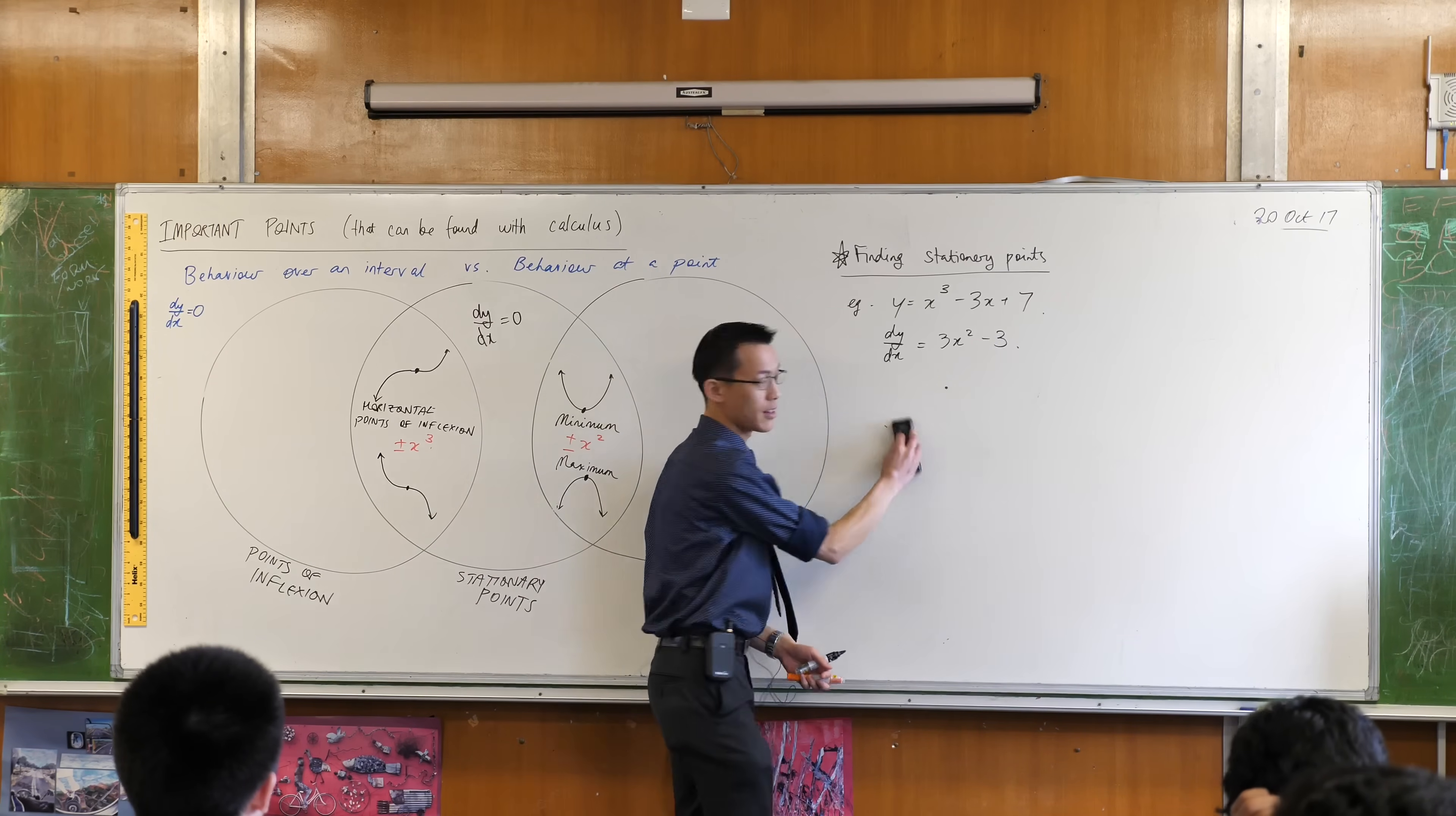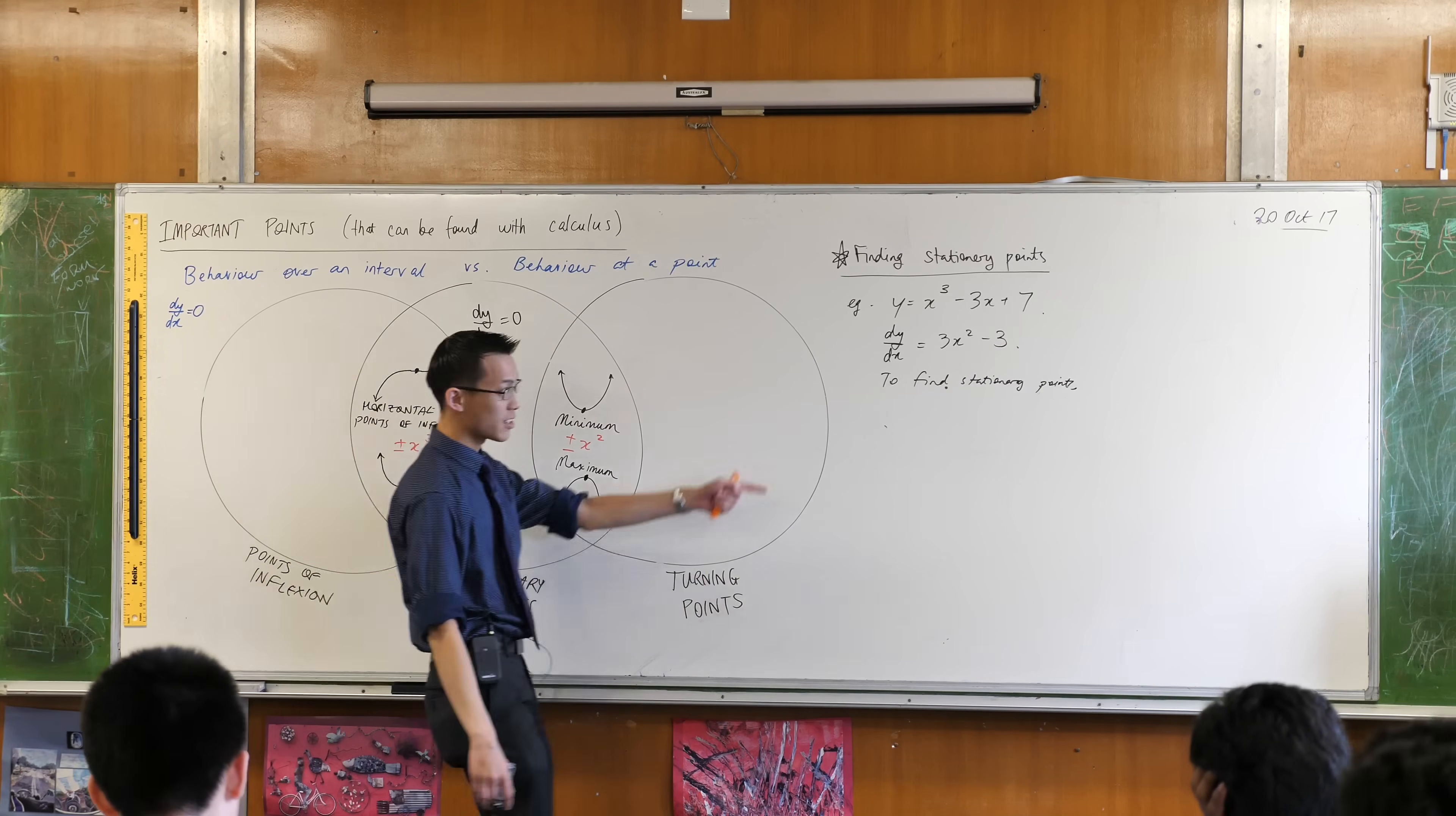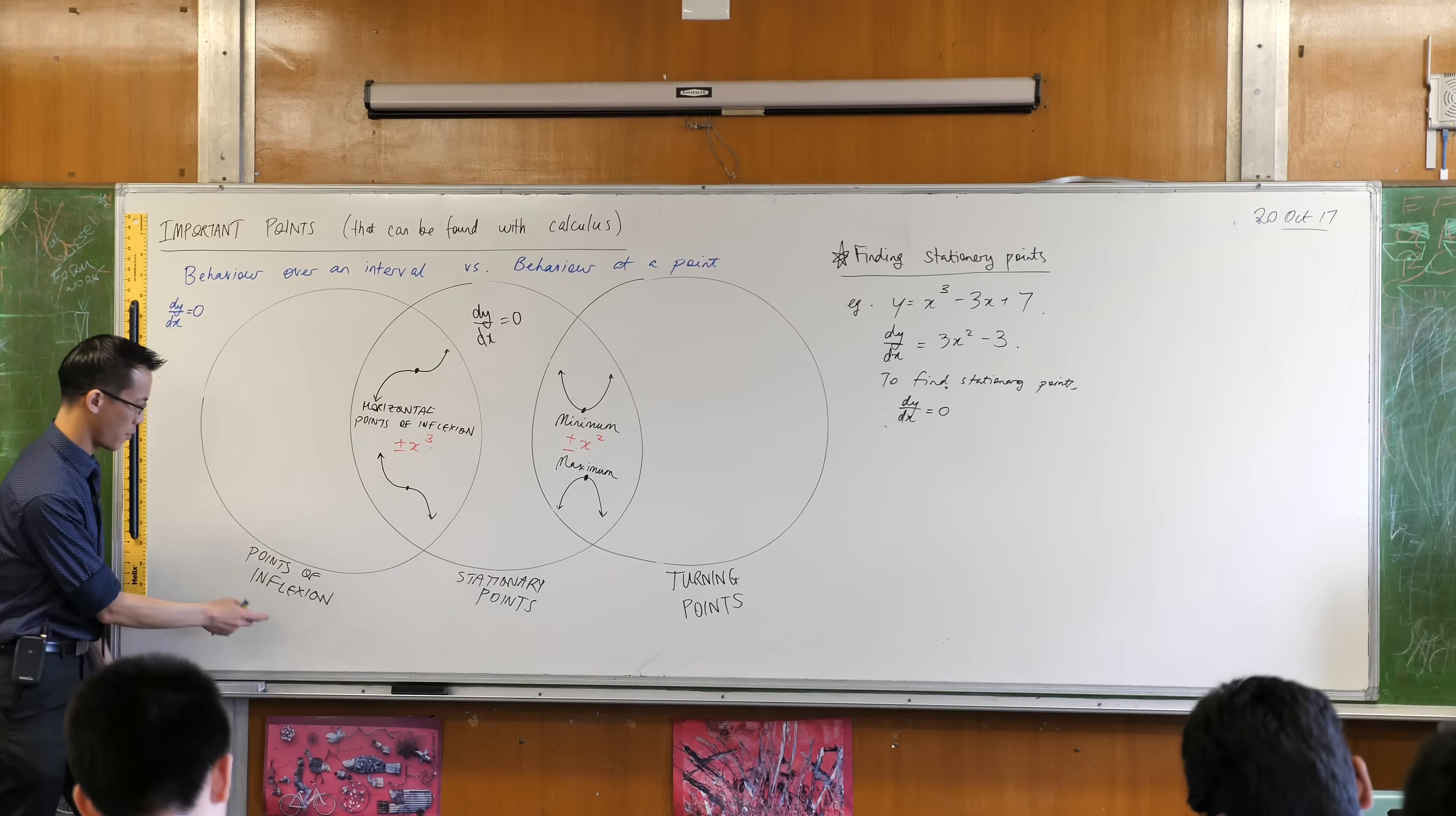So instead of just leaping to this line what you should do is add a tiny bit of connected tissue to say what on earth you're doing. We're trying to find stationary points. So you would say to find stationary points, or if you like, stationary points exist when, and the next thing I'm going to say is let's let the derivative be zero. If you want, if you're in a hurry you probably can abbreviate stationary points as SP but I don't like doing it because when you start having lots of abbreviations you can't remember which ones you're allowed to abbreviate and which ones you're not.